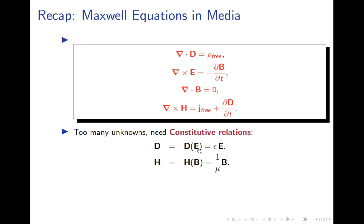The first constitutive relation expresses D as a linear function of E for a linear isotropic homogeneous dielectric — isotropic meaning the same in all directions, homogeneous meaning the same at all locations. Similarly, for paramagnetics we consider linear isotropic homogeneous media where H is parallel to B and equals B over mu, where mu is the absolute permeability and epsilon is the absolute permittivity of the dielectric.